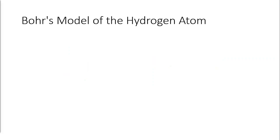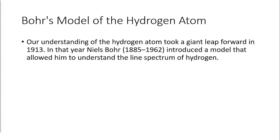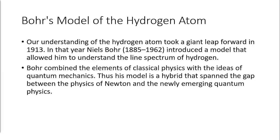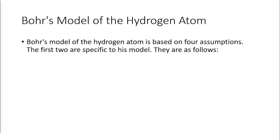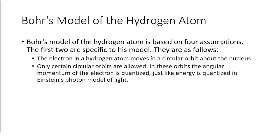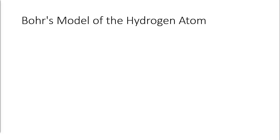Our understanding of the hydrogen atom took a giant leap forward in 1913. In that year, Niels Bohr, who lived from 1885 to 1962, introduced a model that allowed him to understand the line spectrum of hydrogen. Bohr combined the elements of classical physics with the ideas of quantum mechanics. Thus his model is a hybrid that spanned the gap between the physics of Newton and the newly emerging quantum physics. Bohr's model of the hydrogen atom is based on four assumptions. The first two are specific to his model. They are as follows: the electron in a hydrogen atom moves in a circular orbit about the nucleus; only certain circular orbits are allowed. In these orbits the angular momentum of the electron is quantized, just like energy is quantized in Einstein's photon model of light.